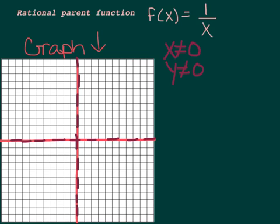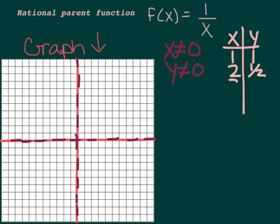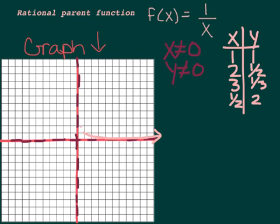Let's make a table of values for x and y. If x is 1, y is 1 — 1 over 1 is 1. If x is 2, y is 1 half. If x is 3, y is 1 third. It's just going to go 1, 1 half, 1 third, 1 fourth, and so on — getting closer and closer but never touching that dotted line. If we go back towards 0, if x was 1 half, y would be 2, because 1 divided by 1 half is 2. Then 1 third would give 3, and so on — it goes infinitely up.